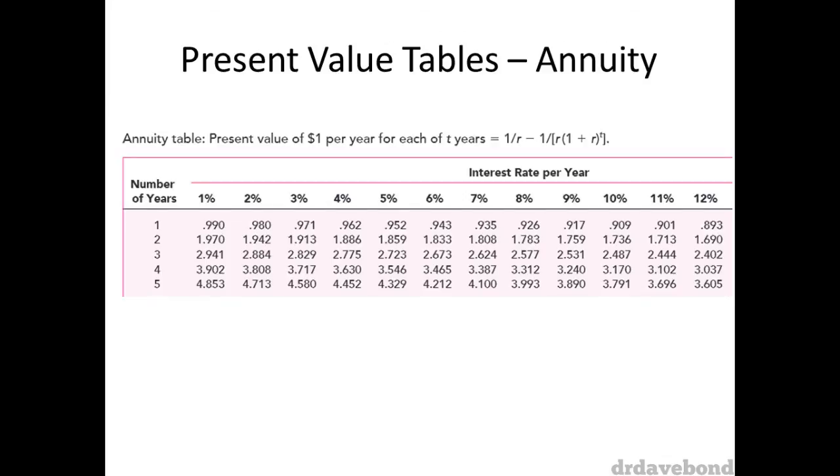To get the present value of the three yearly payments of $10,000 using a 10% discount rate, we do the same thing, but with the present value table of an annuity of a dollar. This intersection leads to a present value factor of 2.487.